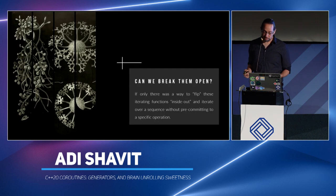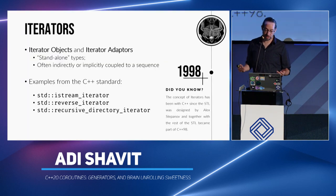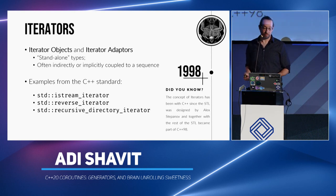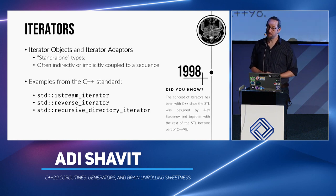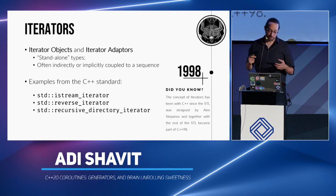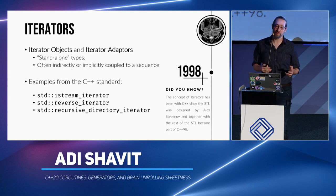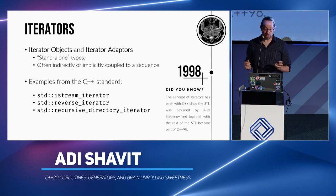The question is whether we can break these two operations apart — flipping it inside out — and separate the iteration from the actual operation. The answer is something we're all familiar with: the design pattern of iterators. Iterators were introduced by Alexander Stepanov in 1993 and came into C++ as part of the standard library in C++98. Iterator types are often standalone types and are frequently not directly coupled to a sequence.